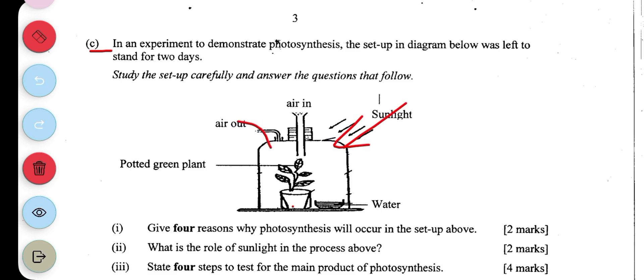Then sunlight into the glass tube. The first question is give four reasons why photosynthesis will occur in the setup above. Because one, there's water, there's also sunlight.